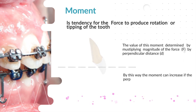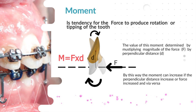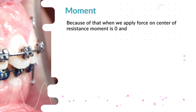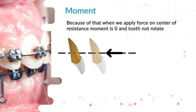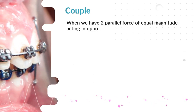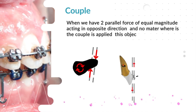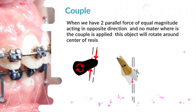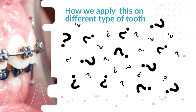By this way, the moment can increase if the perpendicular distance increases or the force increases, and vice versa. Because of that, when we apply a force on the center of resistance, there is no moment and the tooth will not rotate. Couple: when we have two parallel forces of equal magnitude acting in opposite directions, no matter where the couple is applied, the object will rotate around the center of resistance.